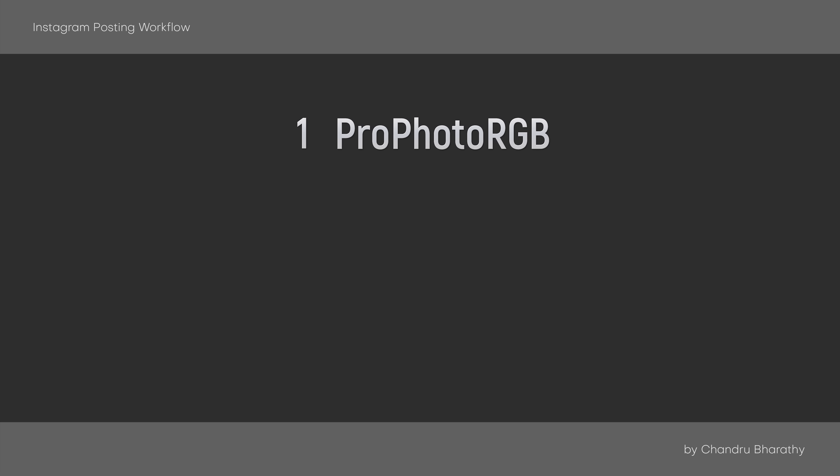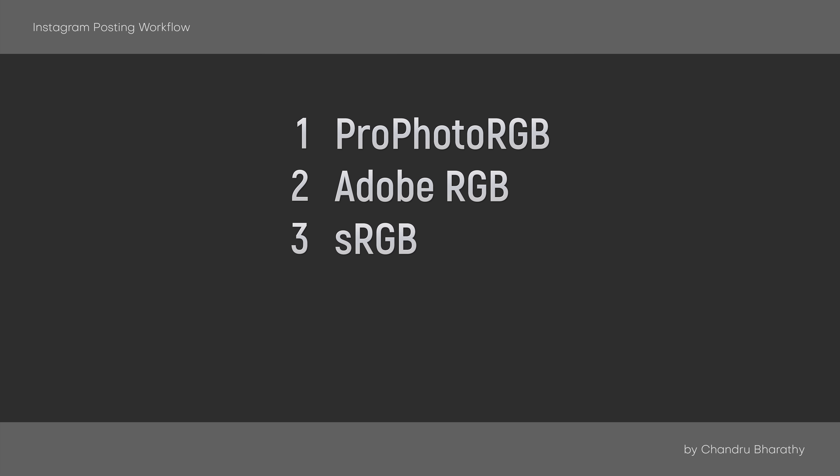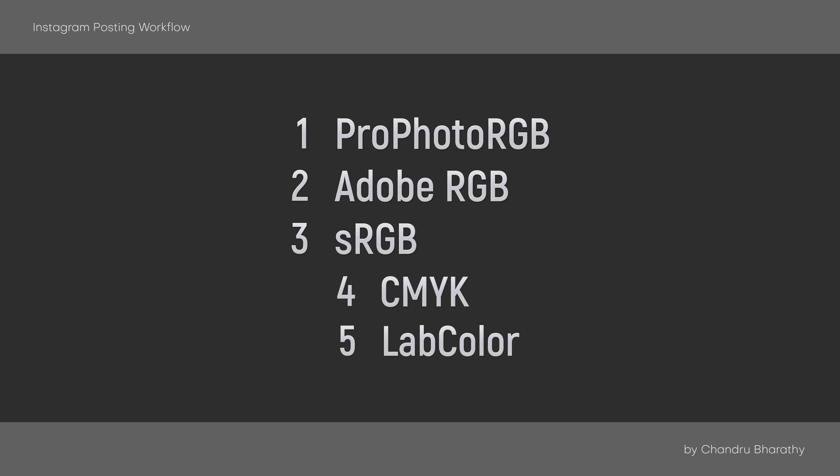First, the color changing problem — it is caused by color space shift, which is color transformation. We use color spaces in day-to-day work: ProPhoto RGB, Adobe RGB, sRGB, CMYK, and Lab Color. CMYK and Lab Color are for printing purposes, so we can remove them from this list. The remaining ones are ProPhoto RGB, Adobe RGB, and sRGB. When we shoot RAW pictures, we work in Adobe RGB and ProPhoto RGB color spaces for color processing.